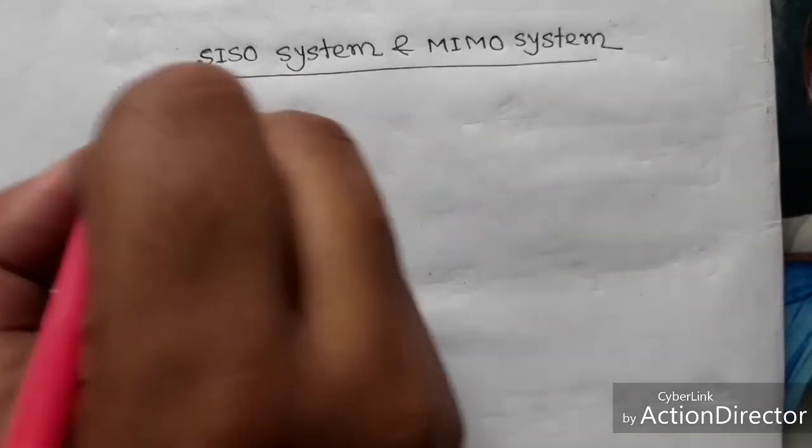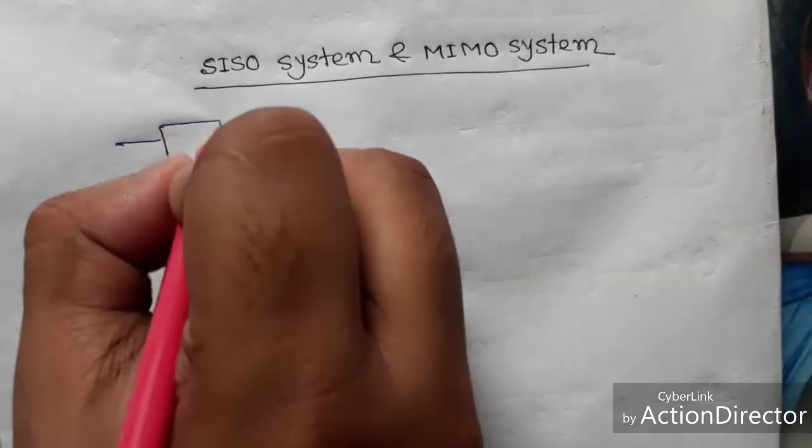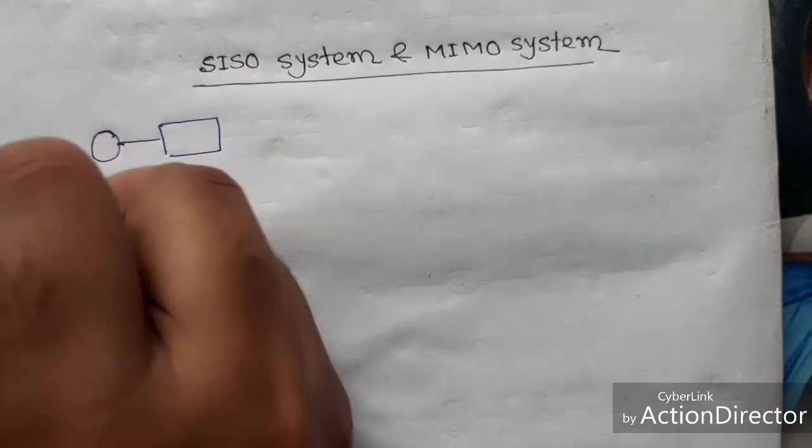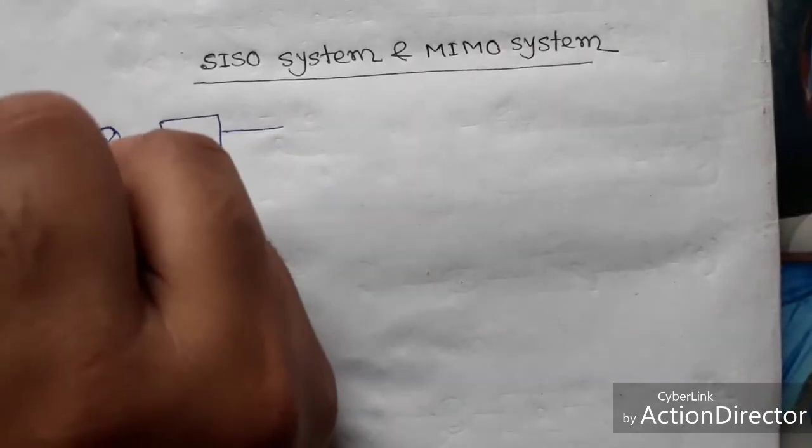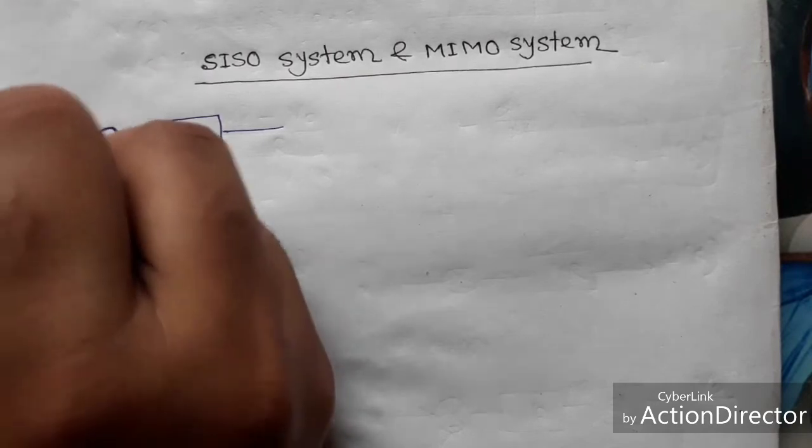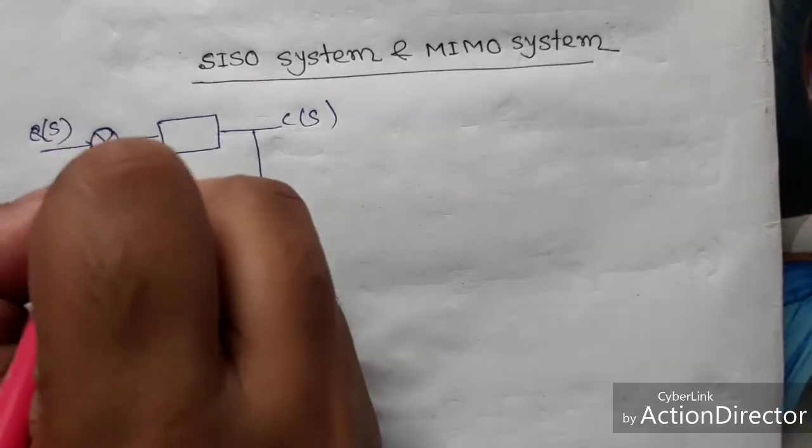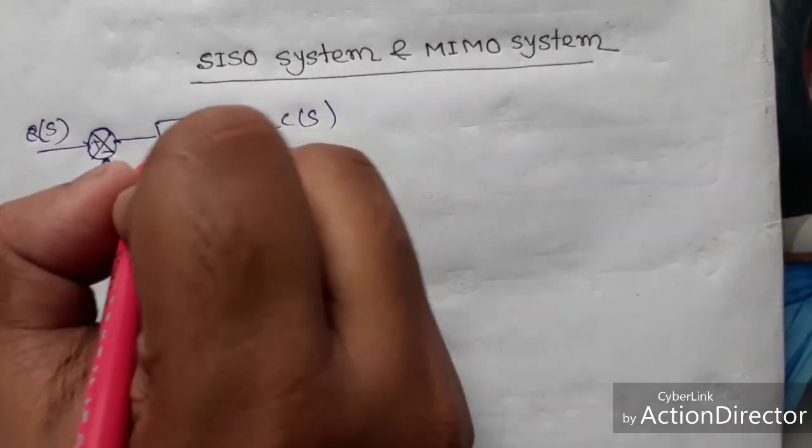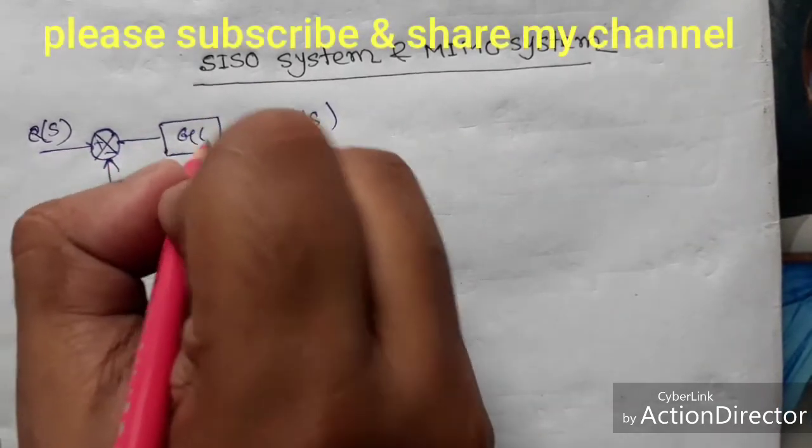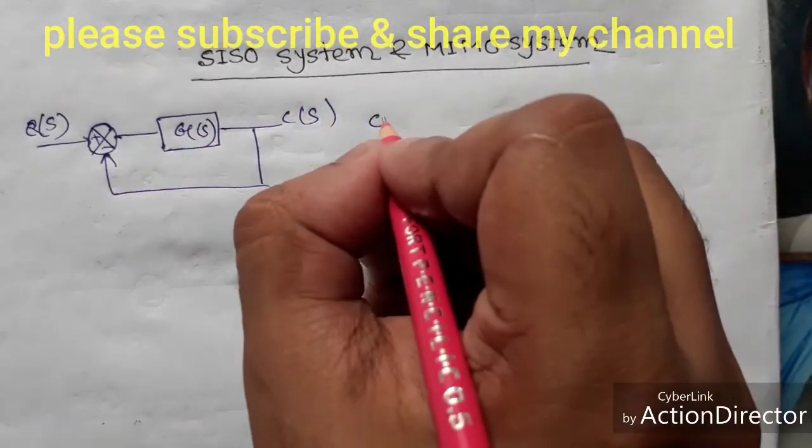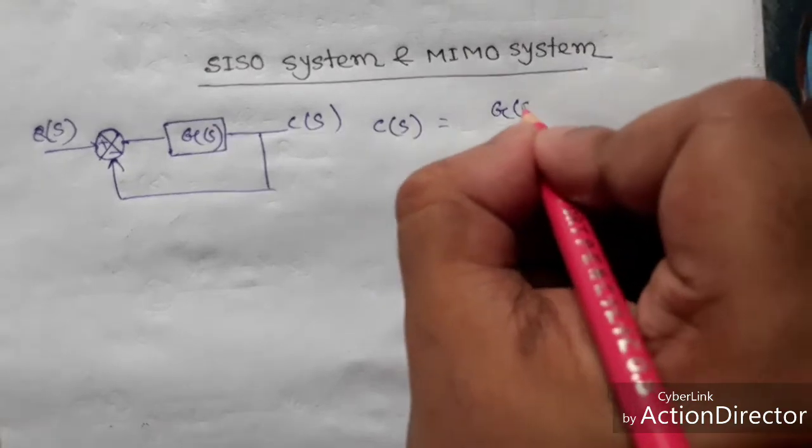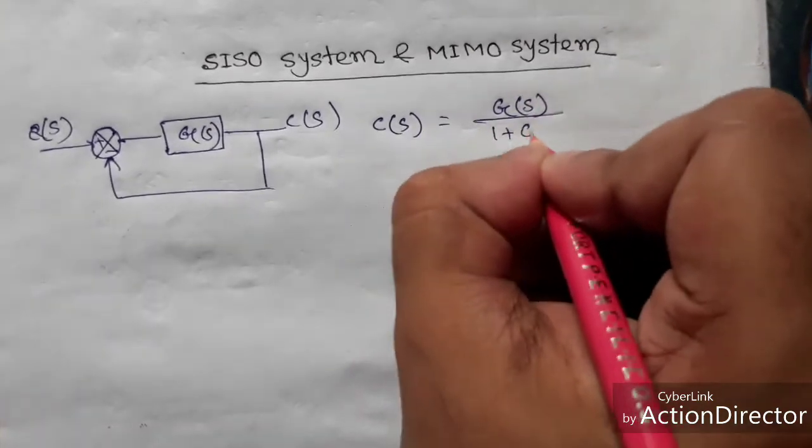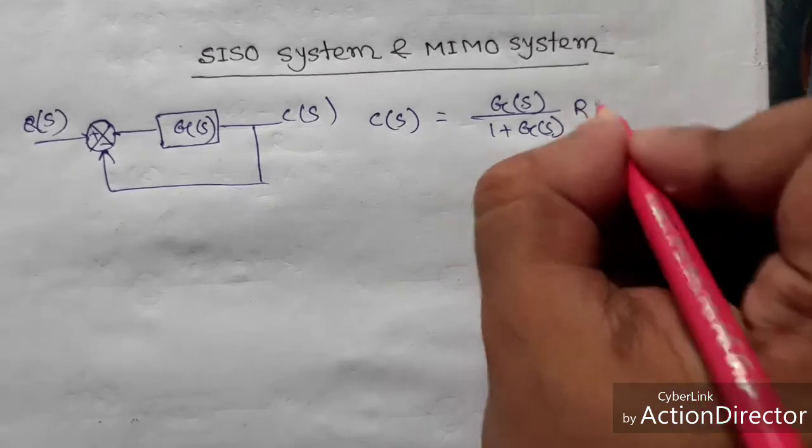So if we consider one block diagram, if this is G(S), this is summing block, so this is R(S) input, this is C(S), and this is negative feedback and this is G(S), then the output will be C(S) equal to G(S) by 1 plus G(S) into R(S).